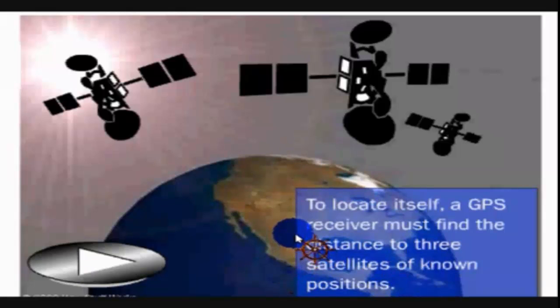As an example of two-dimensional trilateration, we assume a point anywhere in the United States of America and we have three satellites: the first satellite, the second one, and the third one.